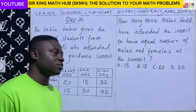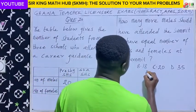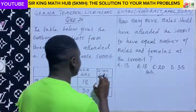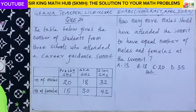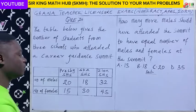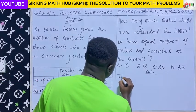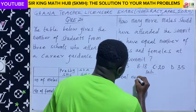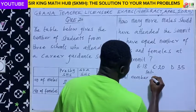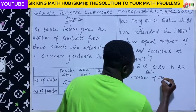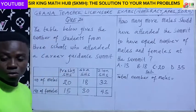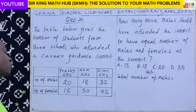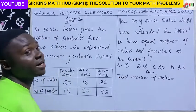To solve this particular question, first of all we need to identify the total number of males who attended the summit, as well as the total number of females who attended the summit. During the exam, calculators are allowed, so we can use our calculator to calculate the number of males.